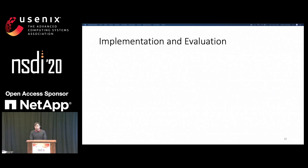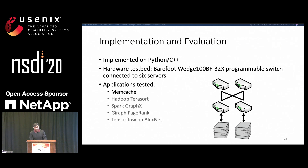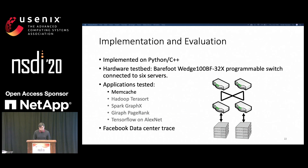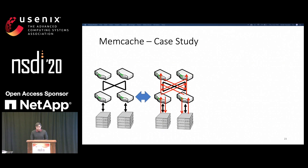Let's come to the implementation and evaluation. We implemented using Python and C++. Our testbed includes four switches with a leaf-spine topology connected to six servers. We tested a variety of applications, but I will only cover memcache here. We also showed the profiler with a Facebook data center trace. We ran a balanced memcache request-response workload every six seconds; each request-response workload lasts approximately three seconds. This was done to ensure that we see a similar amount of fully loaded and no-utilization periods.